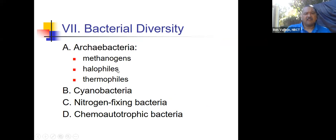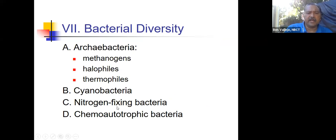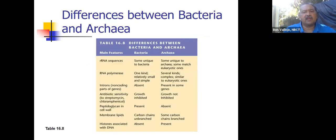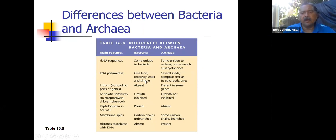An important section of this talk has to do with bacterial diversity. We're going to look at the archaea bacteria and then some other unusual ones. The bacteria and archaea are distinguished on the basis of nucleotide sequences. You can see from this table that there are many biochemical differences between bacteria and archaea — you don't have to memorize these, just take a quick look to appreciate that they have many biochemical differences.